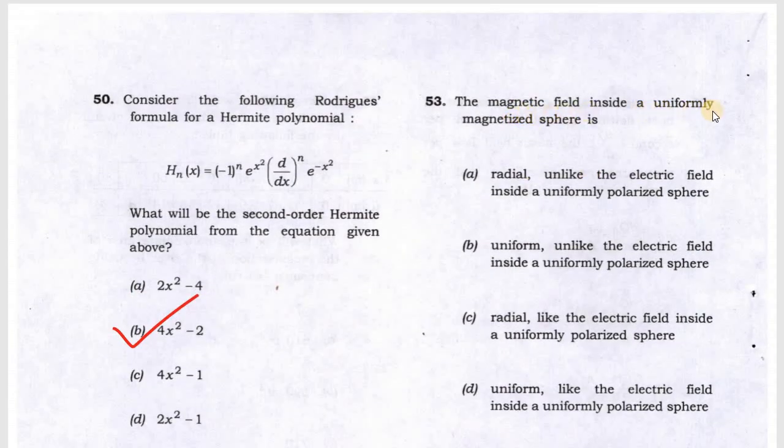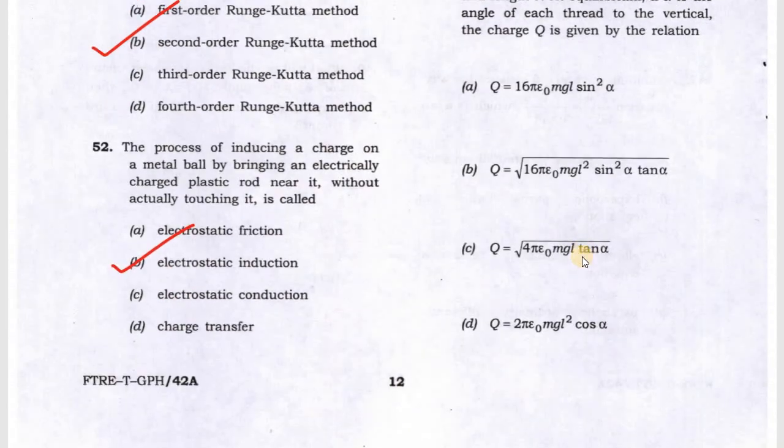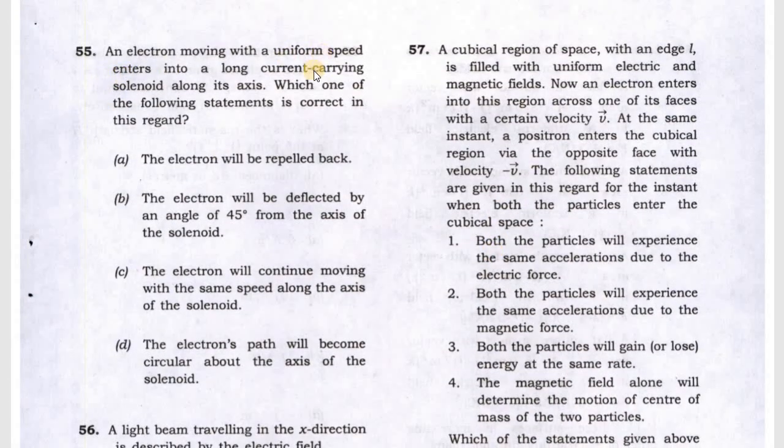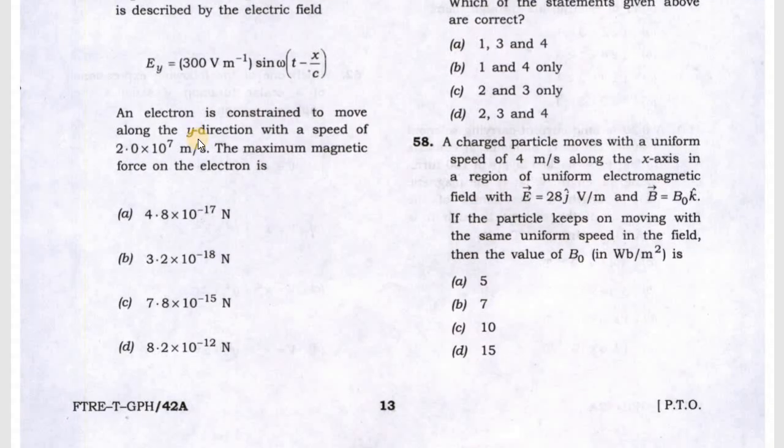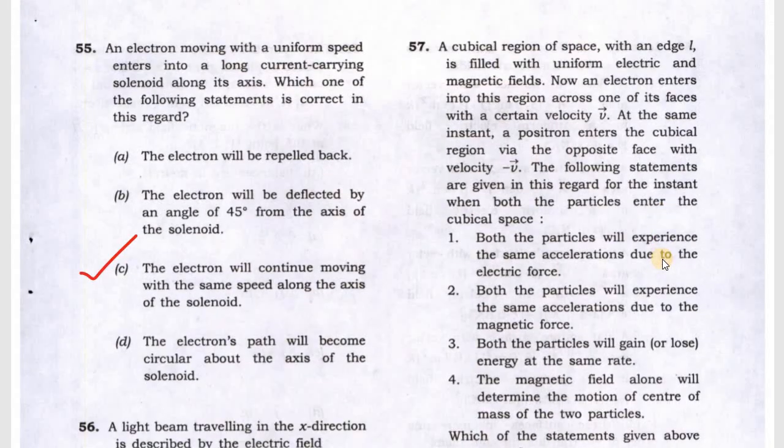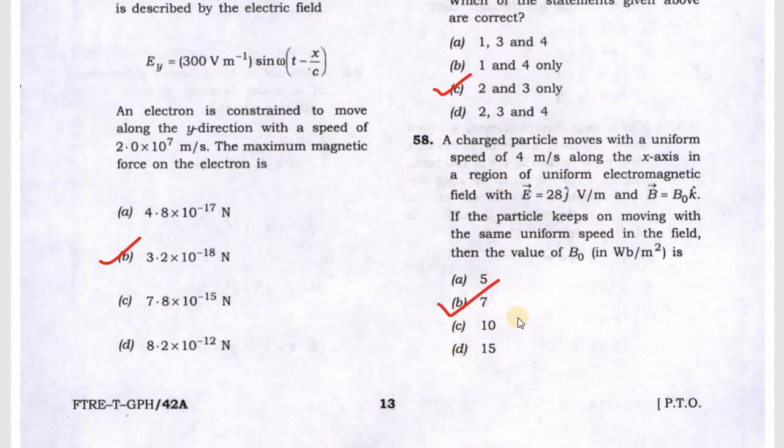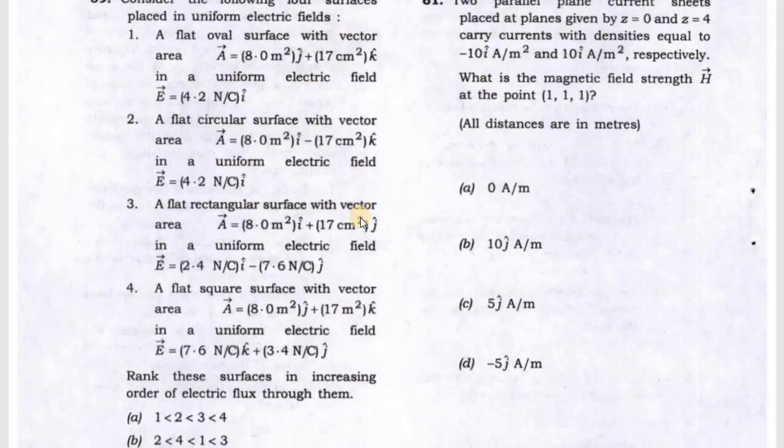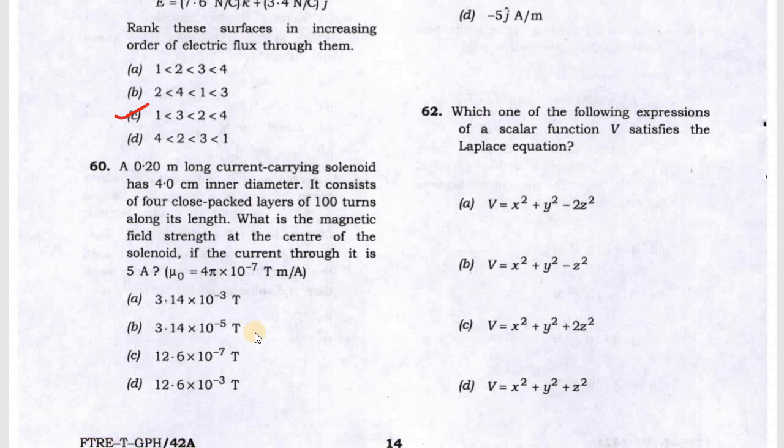Next is the magnetic field inside a uniformly magnetized sphere. This will give D answer, uniform like the electric field in a uniform polarized sphere. Question 54 has two verbs suspended, answer is B. Question 55 answer is C. Electron will continuously move at same speed along the axis of the solenoid. Question 56 will be answer B. Question 57 answer is C. Question 58 will be D. Question 59 is asking about electric flux, this will give you C. Question 60 answer is D, they are asking about magnetic field.